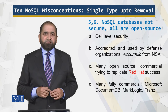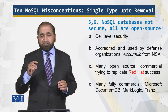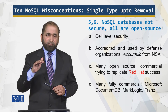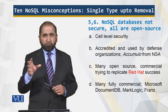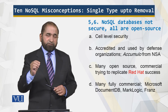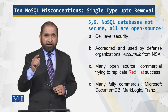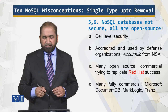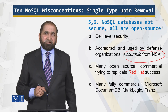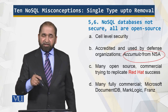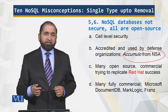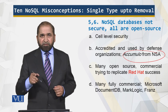The misconception that NoSQL databases are not secure is also wrong. They support cell-level security, meaning you can secure at the level of a single cell, which is the intersection of a row and a column. That level of security is supported. Furthermore, Accumulo came from the National Security Agency — so if NoSQL were not secure, it would not have originated from the NSA.